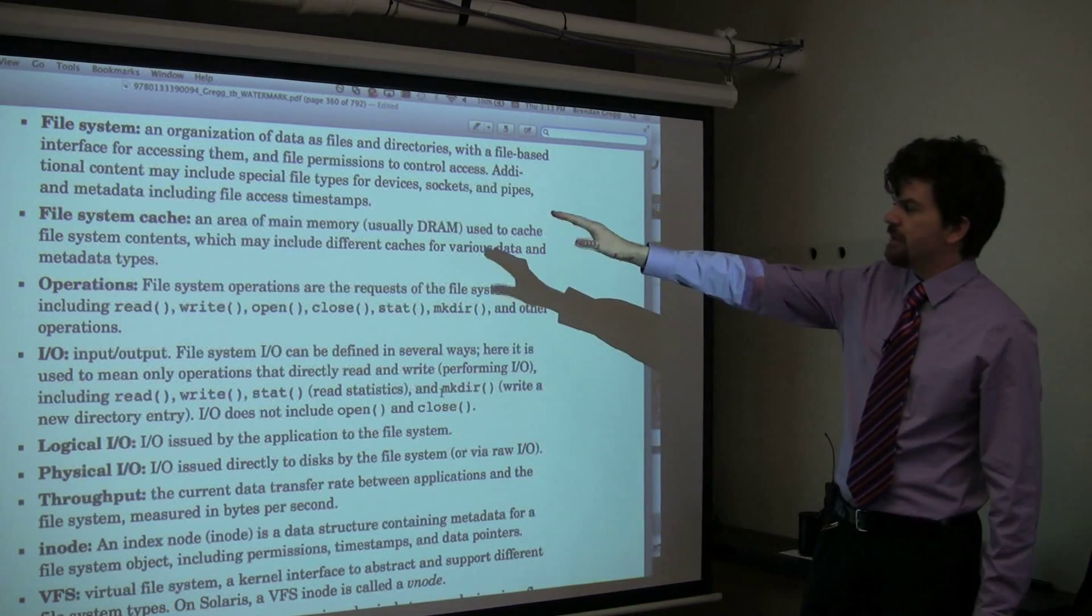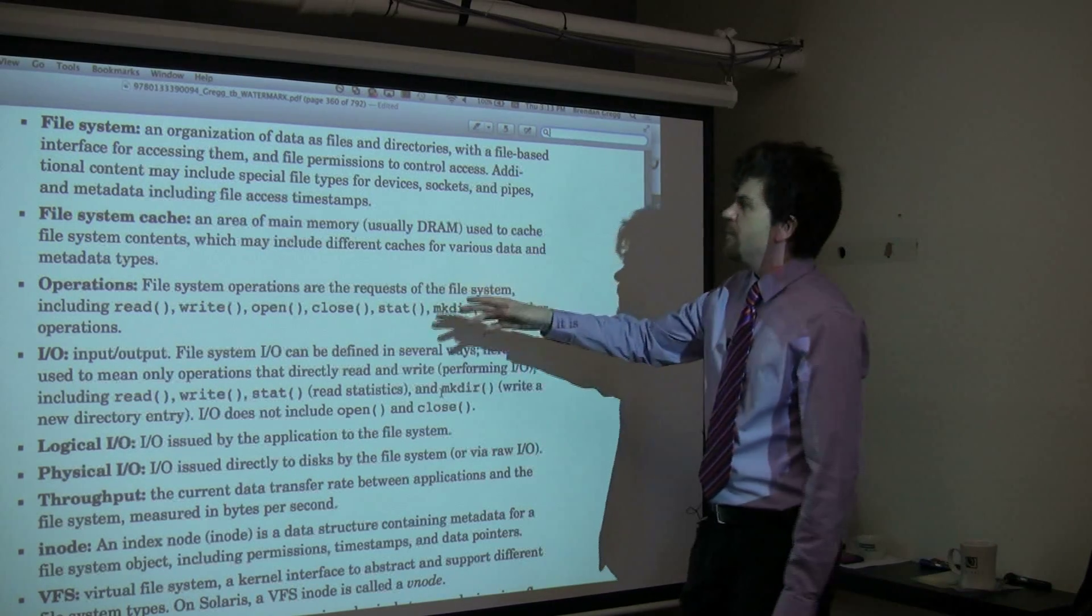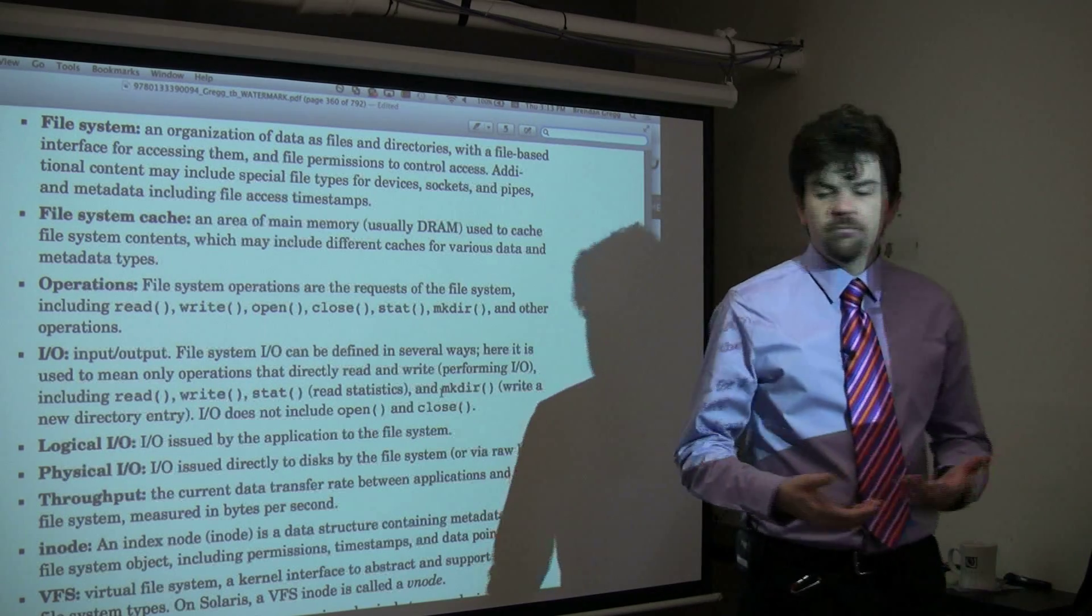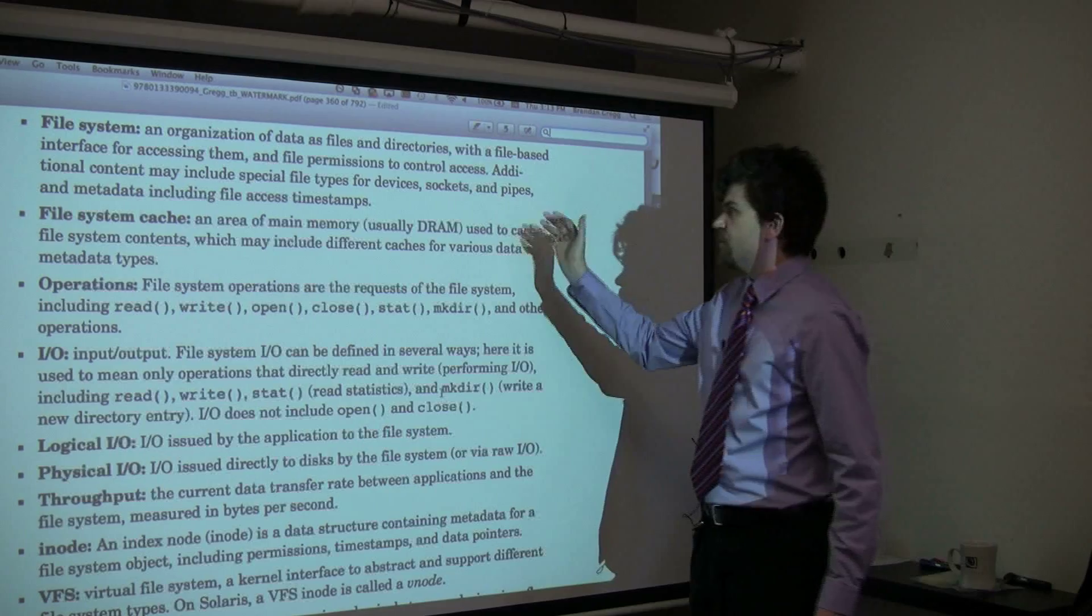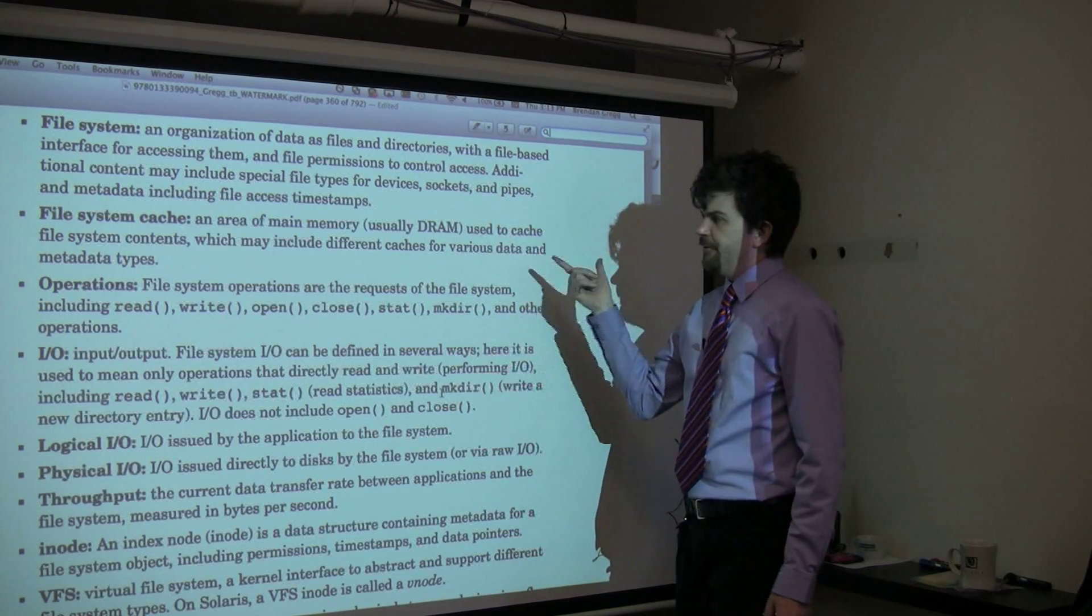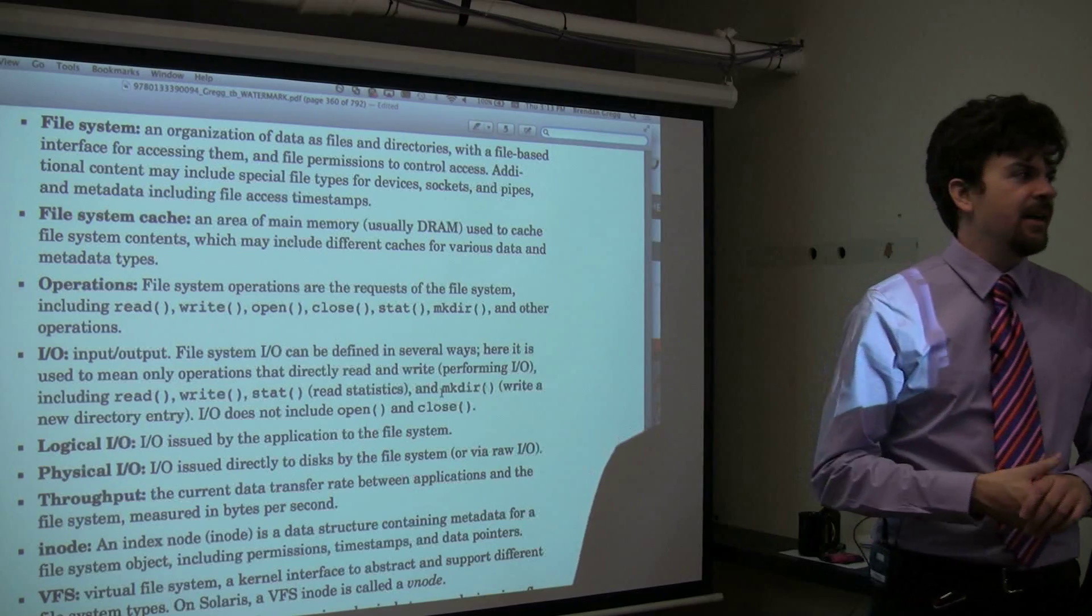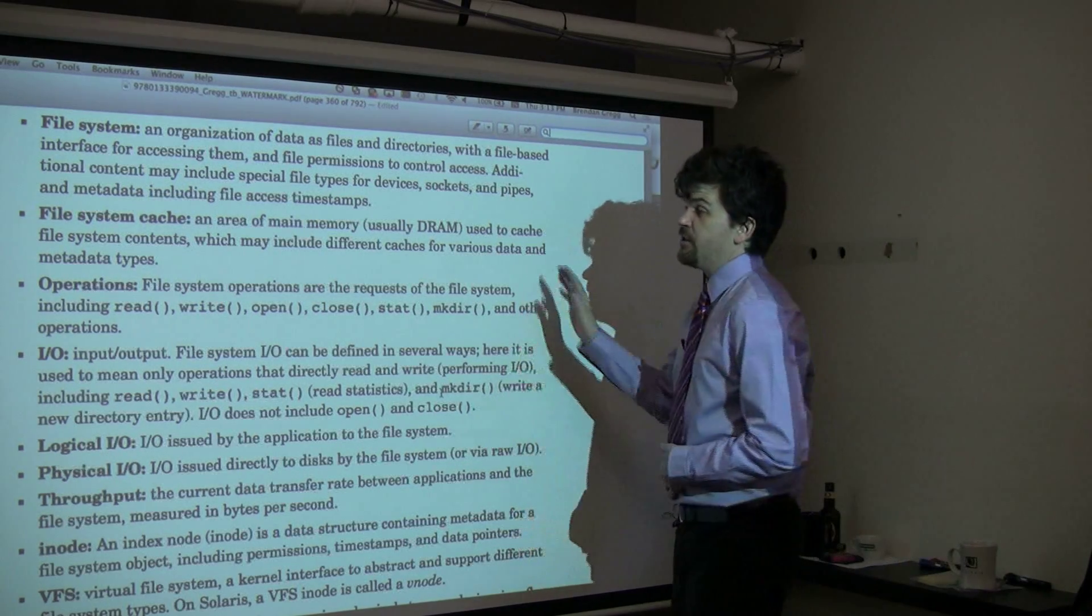A file system is an organization of data and files as directories, with a file-based interface and file permissions to control access. There can be special files that aren't really what you think of as an on-disk file, for things like devices, sockets, and pipes. A file system cache is an area of main memory for storing recently accessed data to improve performance, so you don't need to go to the physical storage devices.